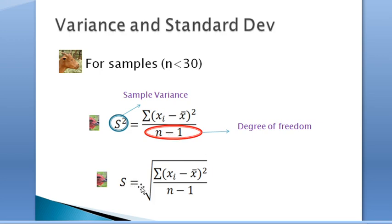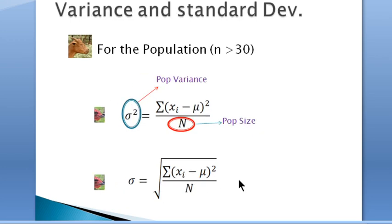For the second situation where we have more than 30 observations, we apply the population estimate. Here the variance is denoted sigma squared and is equal to the formula here presented where n represents the population size. Note that here the population size is used instead of the degree of freedom.